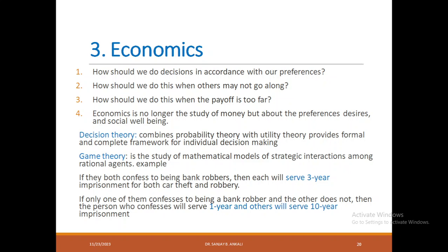Economics comes with decision theory, which tries to make decisions based on the utility theorem. It comes with game theory, which is the study of mathematical models of strategic interactions among rational agents. For example, if there are two robbers and they are not accepting that they robbed a bank, you can throw a question: if both of you confess, you have to serve three years imprisonment. If anyone confesses, the person who confesses will have only one year imprisonment and the other person has to serve 10 years. This is an example of game theory.